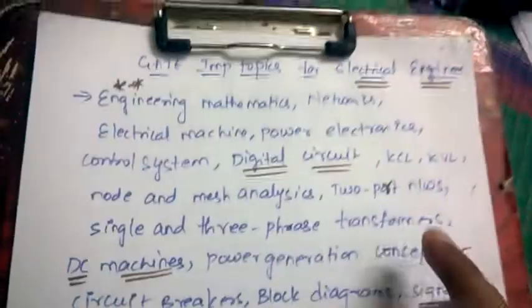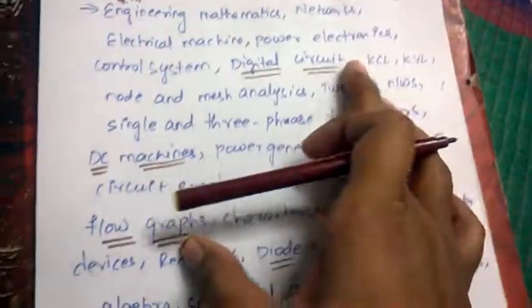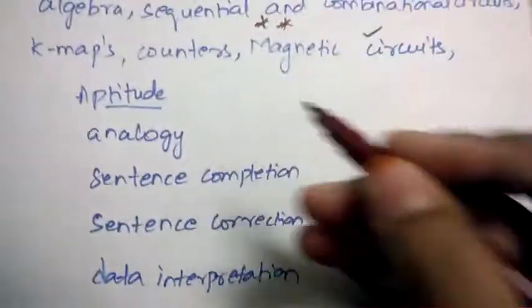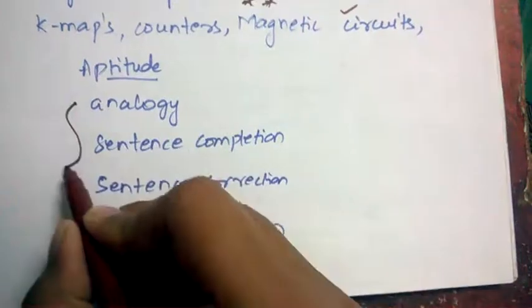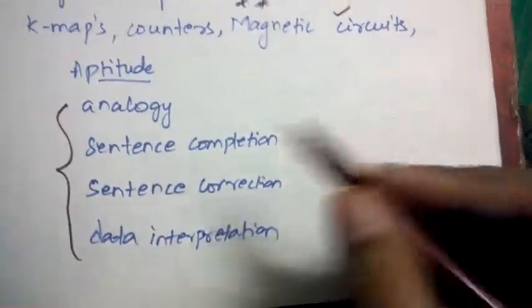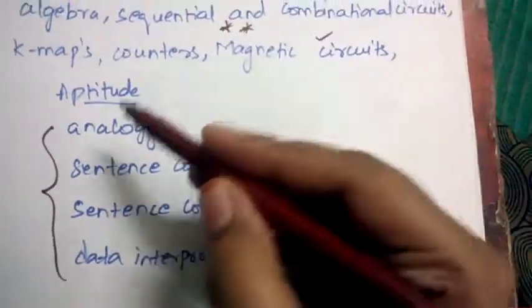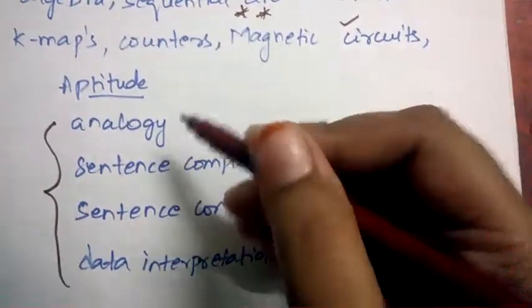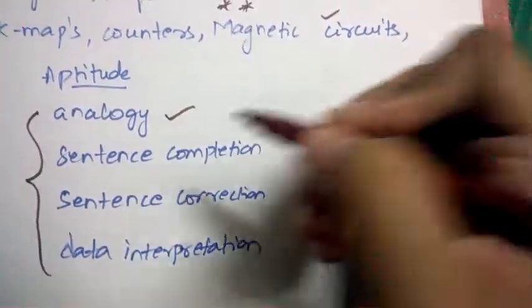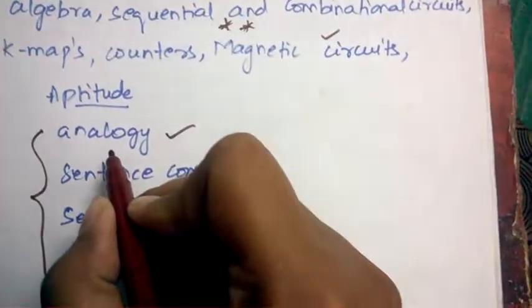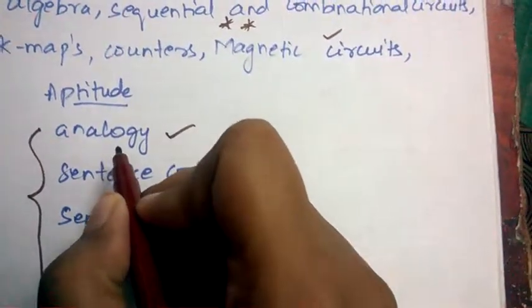Now these are subjective questions. Coming to aptitude, you need to concentrate more on these four topics because these help in high scoring. Aptitude important topics are: analogy - I've already explained you how to solve it, it is very easy. I'll give you an example.